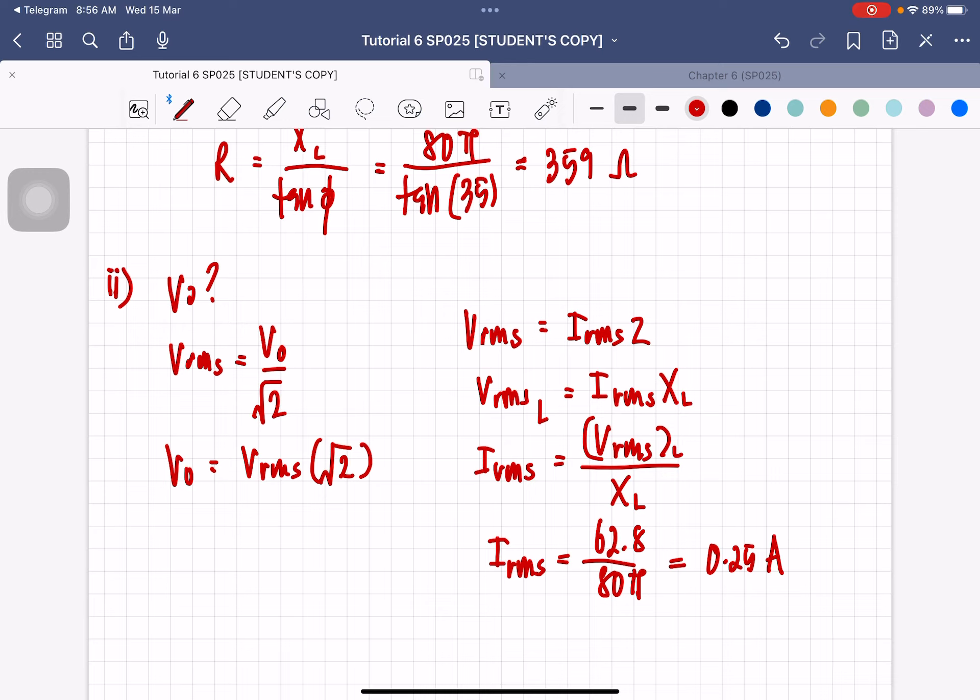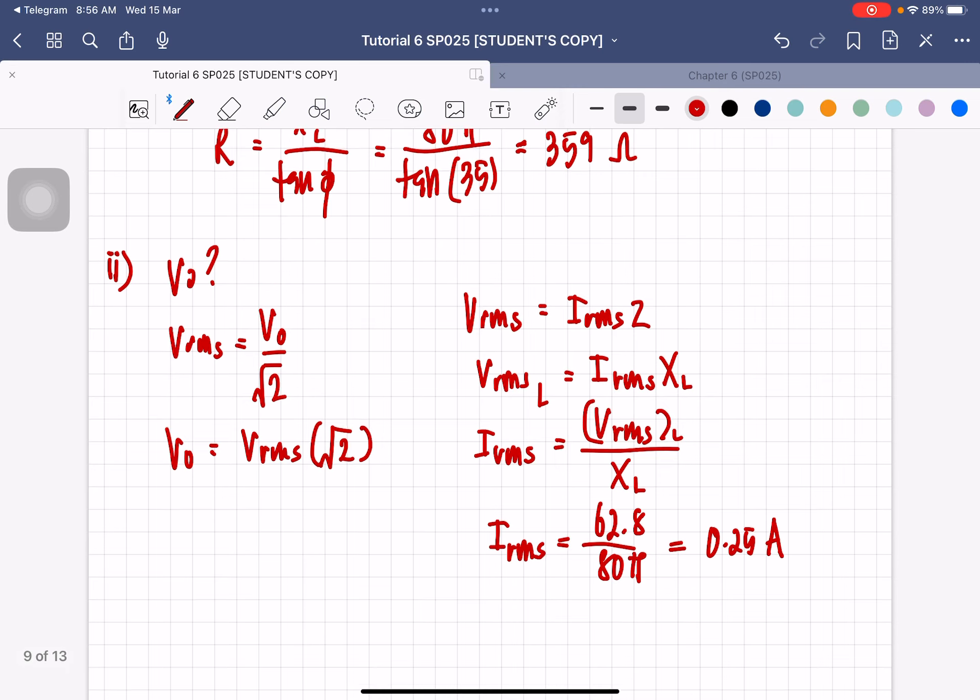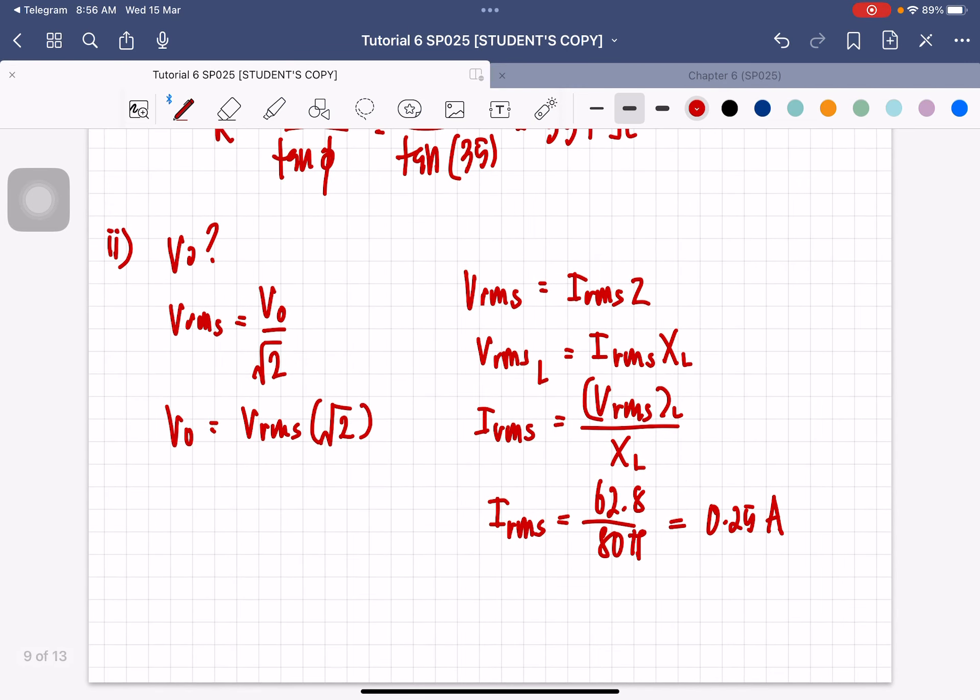Remember the current in series is equal. So we can use the current across the inductor will be equal to the current across the whole circuit. So now we have IRMS, now we need to find Z. So Z is going to be equal to square root of R squared plus XL squared, which is square root of 359 squared plus 80 pi squared. You will then get the impedance to be equal to 438 ohm.